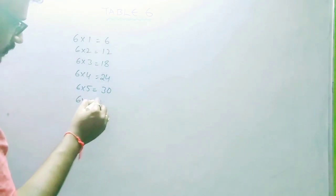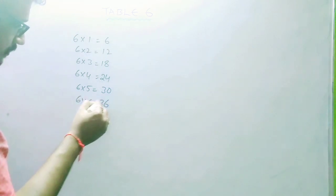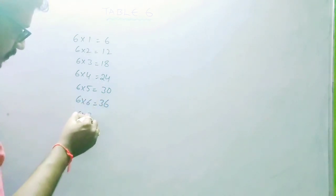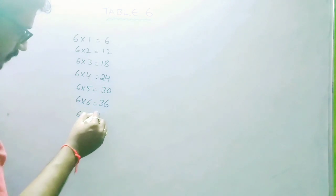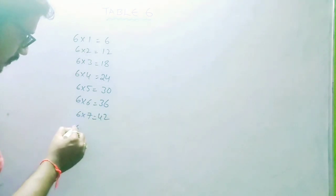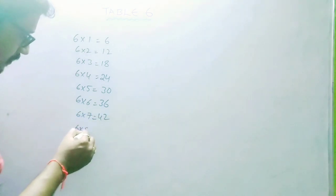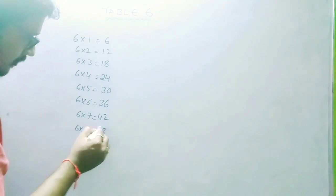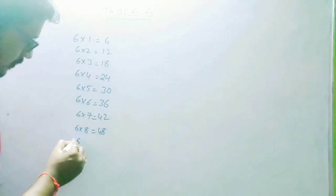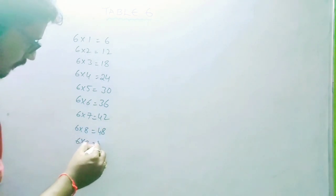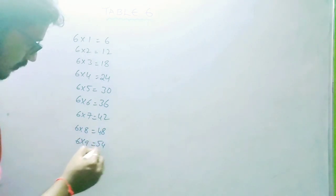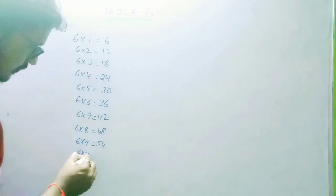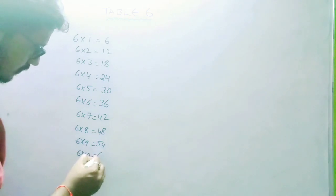6 6s are 36, 6 7s are 42, 6 8s are 48, 6 9s are 54, 6 10s are 60.